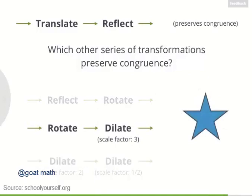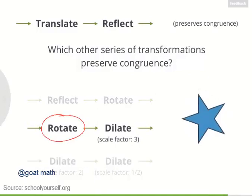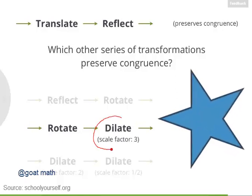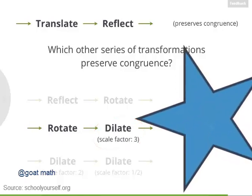Let's look at the second series of transformations. If we rotate our star it's still congruent, but then if we dilate it with a scale factor of 3, it gets a lot bigger. And this larger star is definitely not congruent to the original. It's similar, but not congruent.